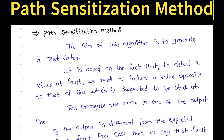In this video, let us try to understand the working of the path sensitization method. The main aim of this algorithm is to generate a test vector. A test vector can also be called as a test case or stimulus — they are simply the test cases that we apply.